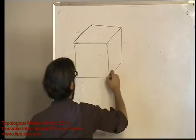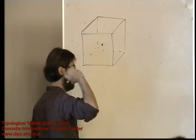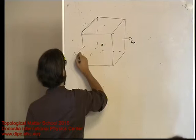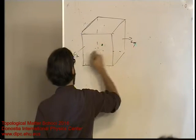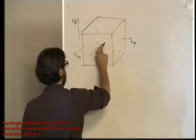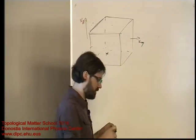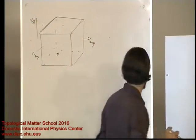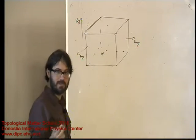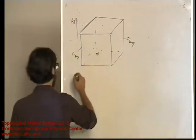Think of having just one Weyl fermion with periodic boundary conditions everywhere in kx, ky, kz. We understood last time that you can't have just one because you would have a Dirac string coming out of the Fermi surface around it.